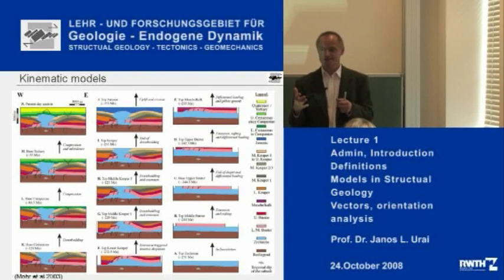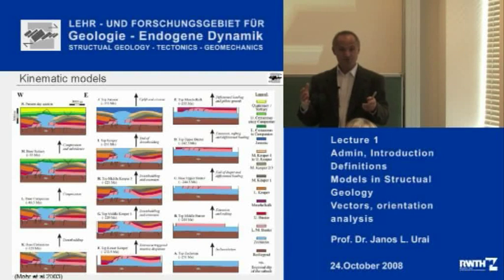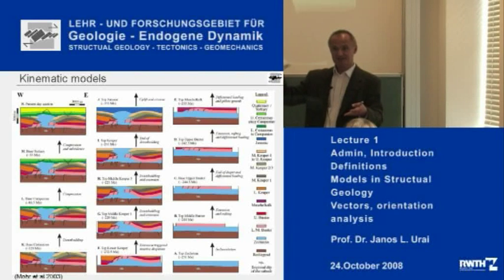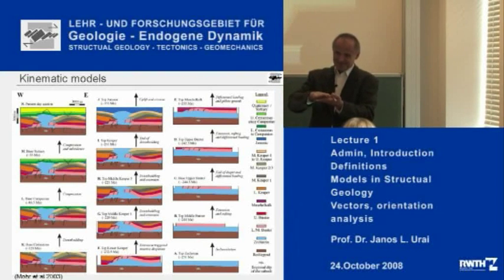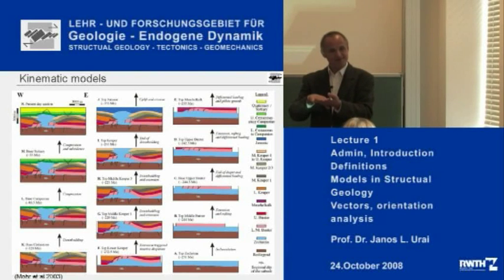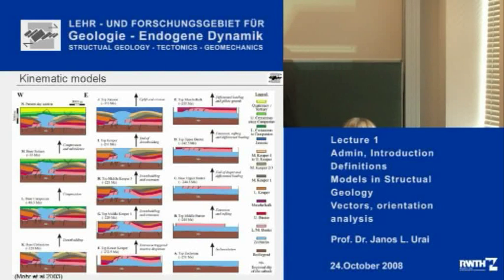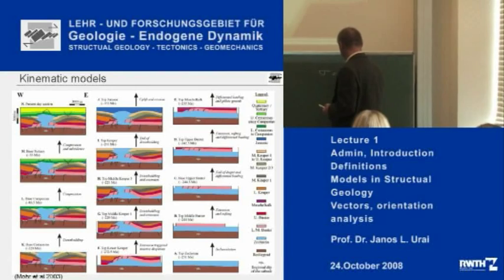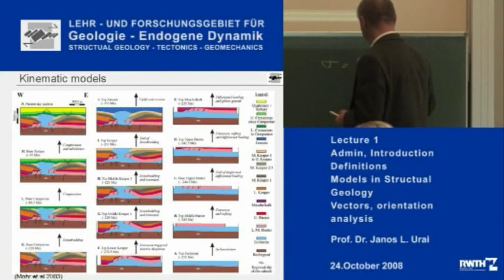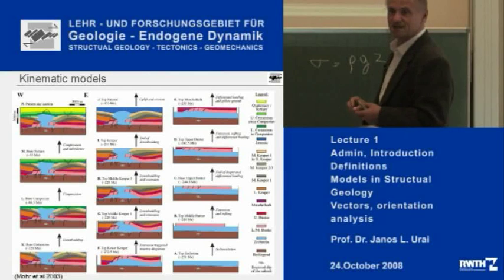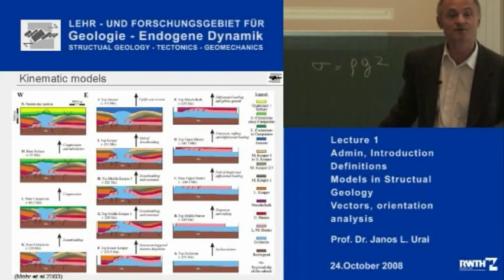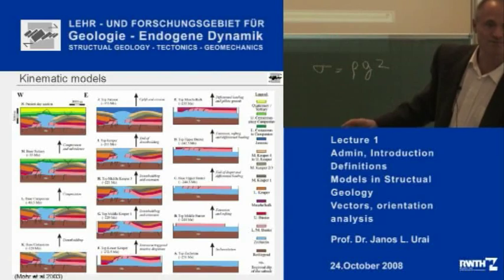Most of you probably know why it is wrong. Because if you reduce the size of the model, then the stresses which are trying to break the little stones are also reduced. There is a very important formula we are going to see many times in this lecture: the stress equals the density times the acceleration of gravity times the height.